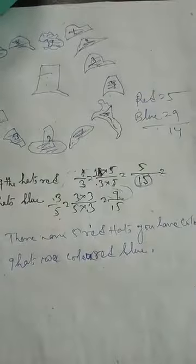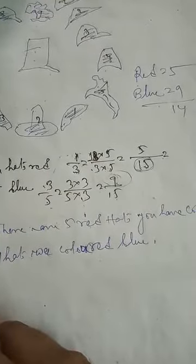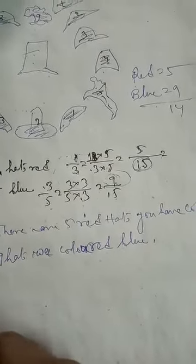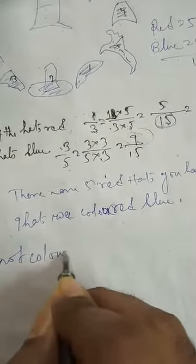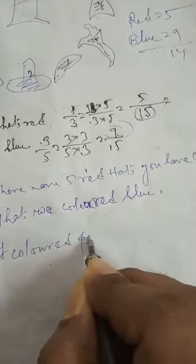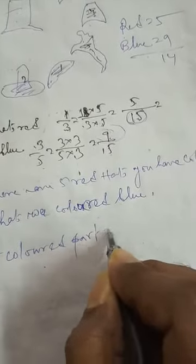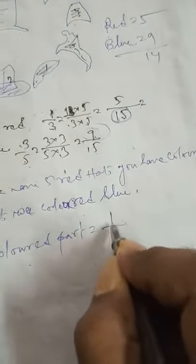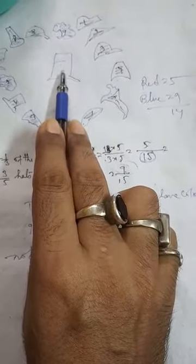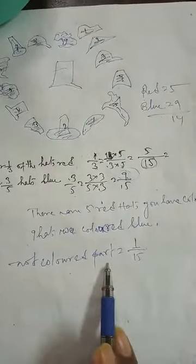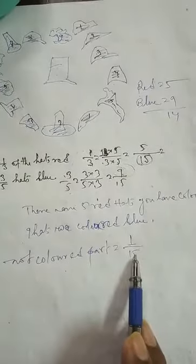What is the fraction or part that is not colored? The not-colored part is 1 by 15. Why 1 by 15? Because only 1 cap remains that is not colored, and total is 15 caps. So the not-colored part is 1 by 15.